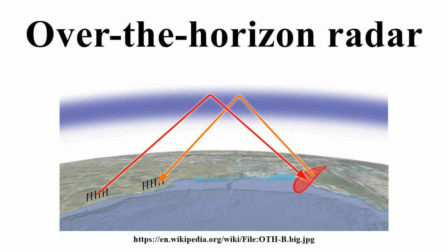Built outside Gomel near Chernobyl, DUGA-3 was aimed northward and covered the continental United States. Its loud and repetitive pulses in the middle of the shortwave radio bands led to it being known as the Russian Woodpecker by amateur radio operators. The Soviets eventually shifted the frequencies they used, without admitting they were even the source, largely due to its interference with certain long-range air-to-ground communications used by commercial airliners.